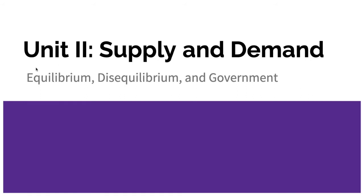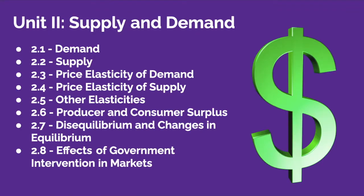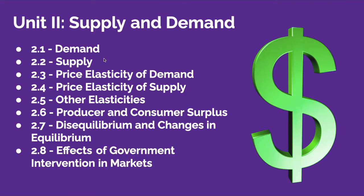Alright, so Unit 2 is supply and demand — equilibrium, disequilibrium, and the government. Today we're only focusing on sections 2.1 and 2.2, setting the table for everything else by just looking at supply and demand on their own. Let's start with the demand side.